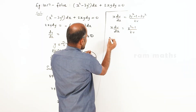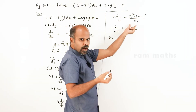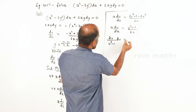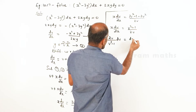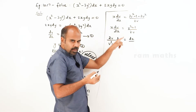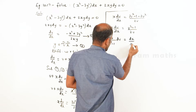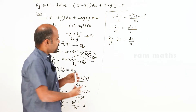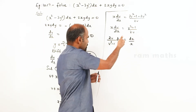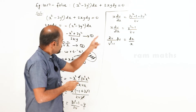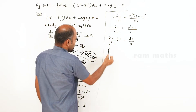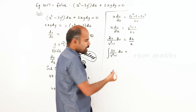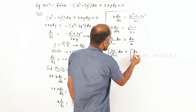Rearranging to variables separable form: dv and dx go to opposite sides. The denominator goes to numerator on the other side. So we get integral of 2v by (v² minus 1) dv equal to integral of dx by x.